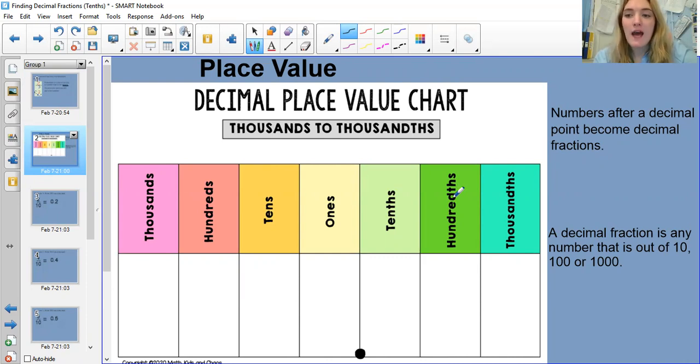Numbers after a decimal point become decimal fractions because they're now only part of that number. A decimal fraction is any number that has to be out of ten, a hundred, or a thousand. We're looking at tenths today, we're looking at this column.